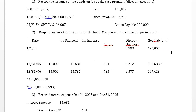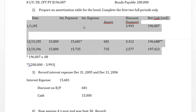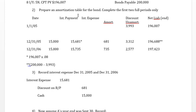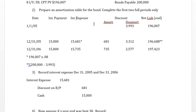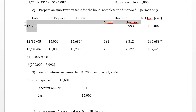To build an amortization table, we'll cover the first two full periods: all of 2005 and 2006. The table has columns for the date, the interest payment amount, interest expense, the amount of discount amortized, the unamortized discount, and the net liability. At issue date, there is no payment or expense booked — the unamortized discount is $3,993 and the net liability is $196,007, which equals the cash received at issue.